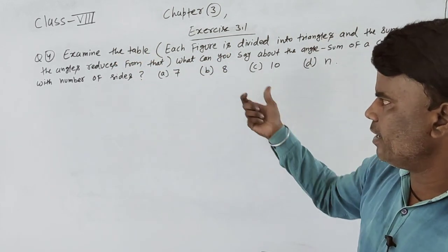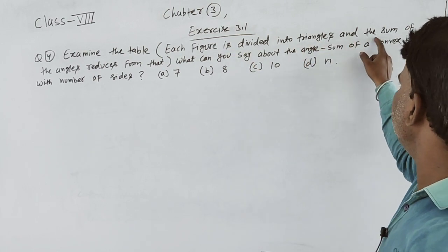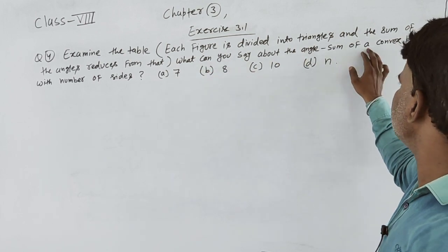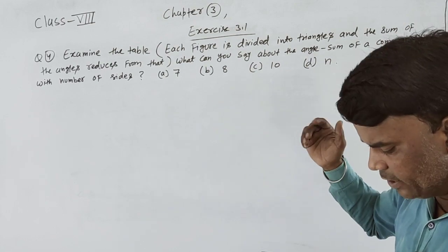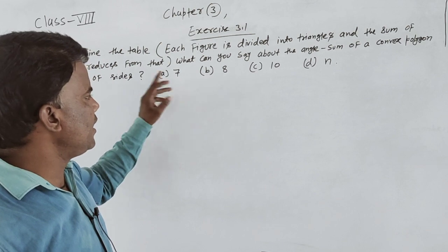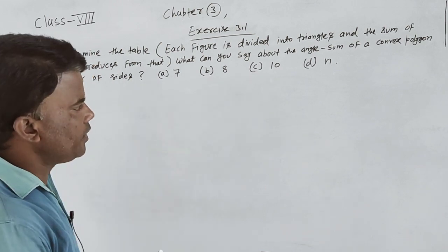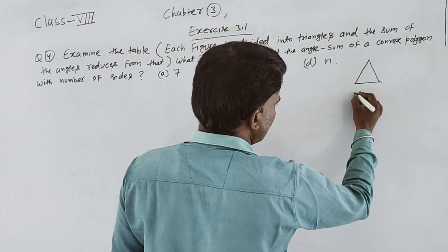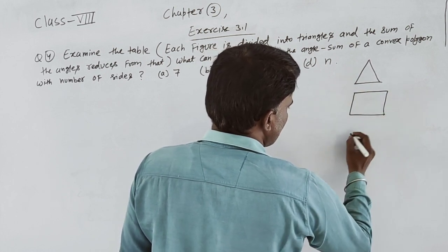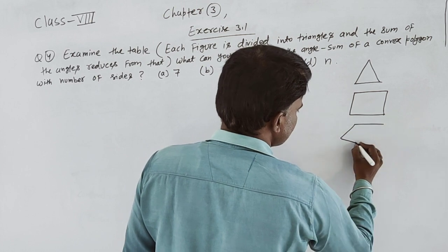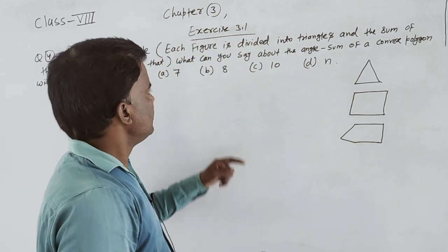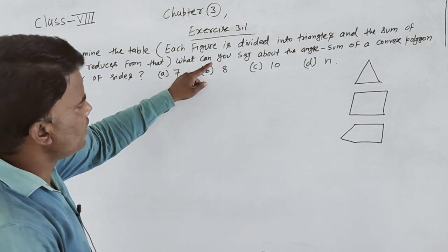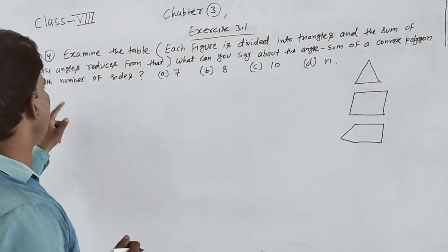Examine the table. The table given shows each figure divided into triangles and the sum of the angles derived from them. What can you say about the angle sum of a convex polygon with a given number of sides?